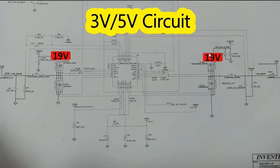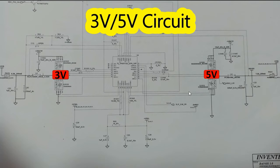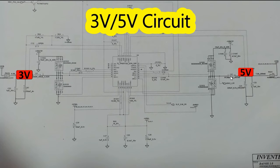Sometimes a MOSFET with 19V at the drain can give 19V as output — this happens at the input of the motherboard next to the power jack, where we have switches. That's how we get 3V and 5V due to the control signal. These two voltages are then applied to two inductors — L4 and L3 — one for each channel.